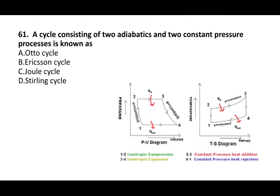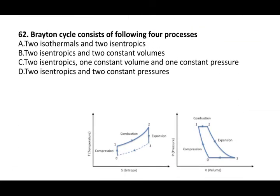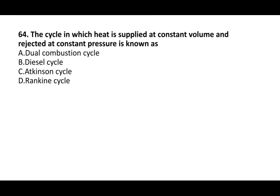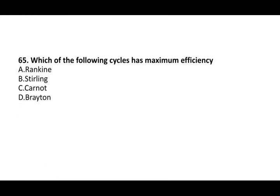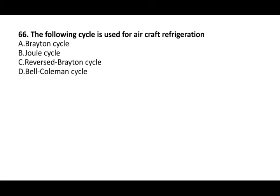Next question: a cycle consisting of two adiabatic and two constant pressure processes is known as the Joule cycle. Next question: the Brayton cycle consists of two isentropic and two constant pressure processes. The reverse Joule cycle is called the Brayton cycle. Next question: the cycle in which heat is supplied at constant volume and rejected at constant pressure is known as the Atkinson cycle. Next question: which cycle has maximum efficiency? The answer is the Carnot cycle. The reverse Brayton cycle is used for aircraft refrigeration.